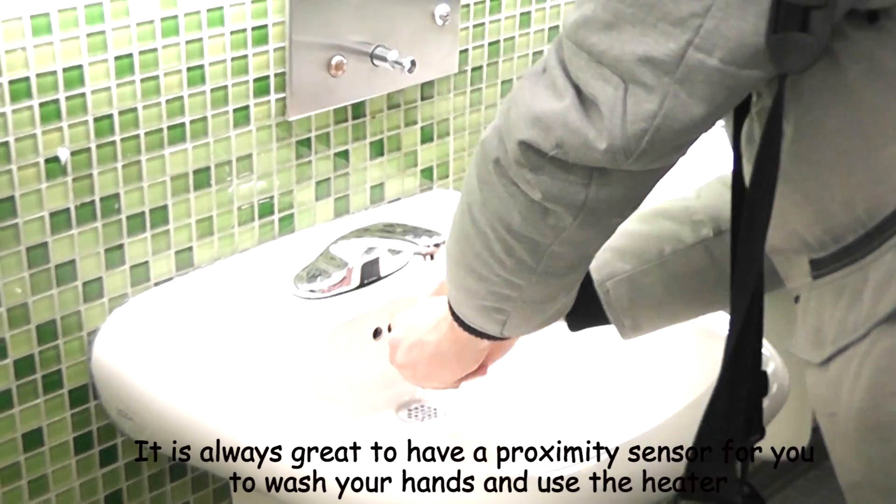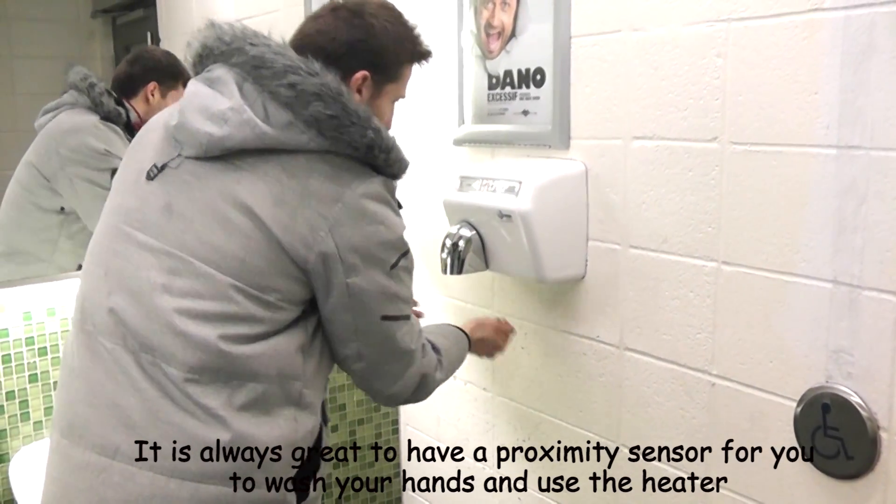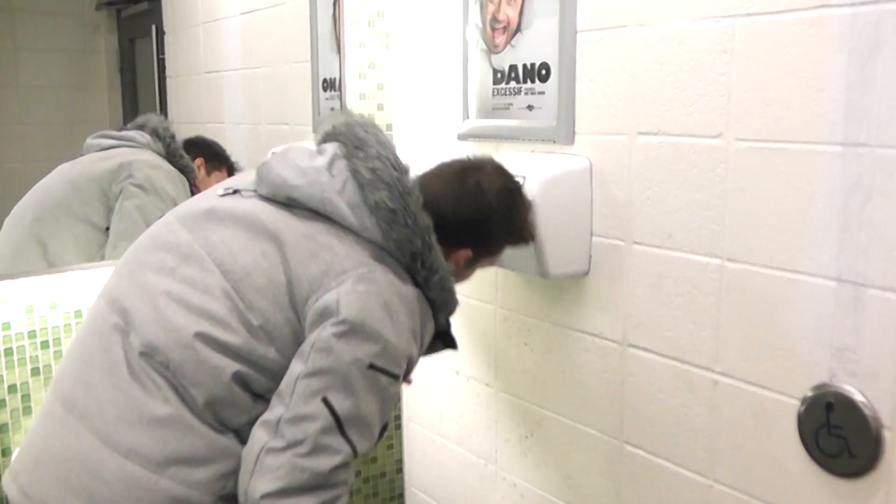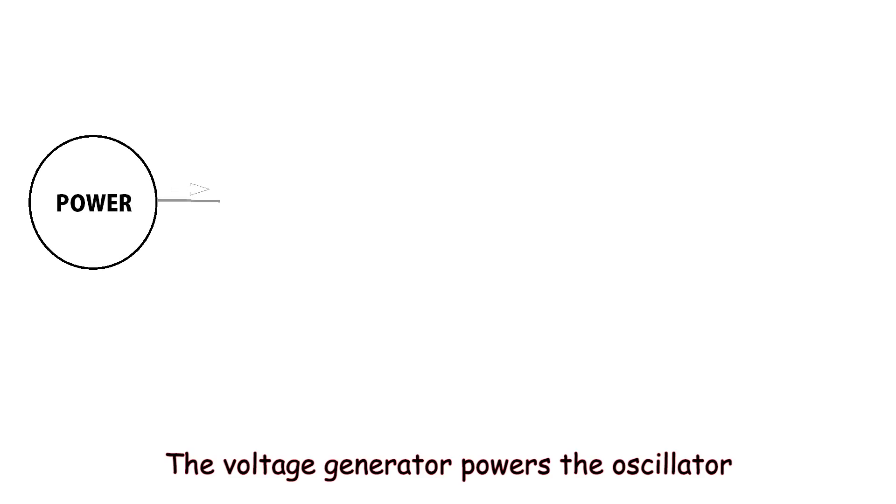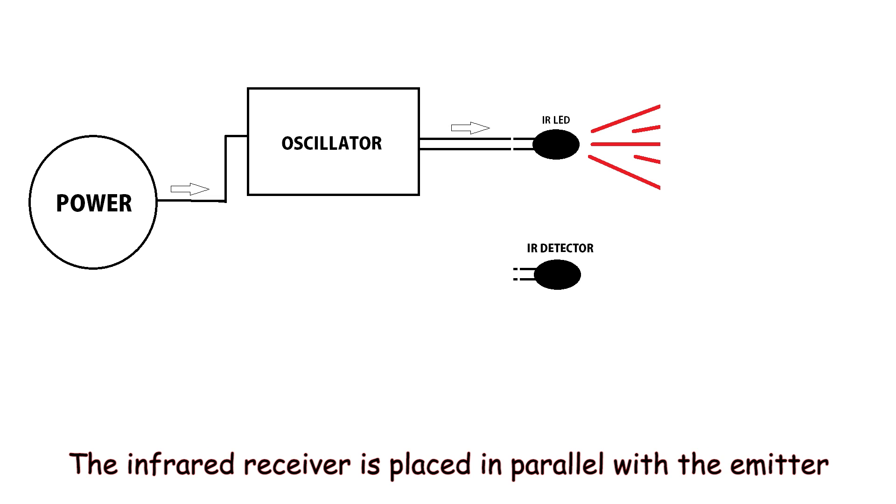It's always great to have a proximity sensor for you to wash your hand and use the heater. So how does it work? The voltage generator powers the oscillator which causes the infrared LED to start flashing. The infrared receiver is placed in parallel with the emitter so that it's prevented from detecting the flashing LED.